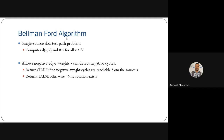It can compute shortest paths with negative edge weights. It can also detect negative weight cycles — it returns true if there is no negative weight cycle, meaning all vertices are reachable from the source with some fixed shortest path. It returns false when there is no solution, i.e., when a negative cycle exists.